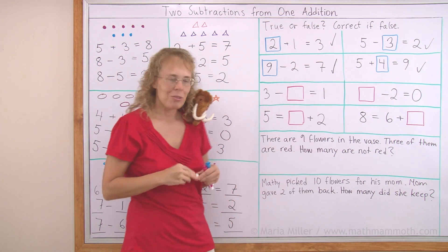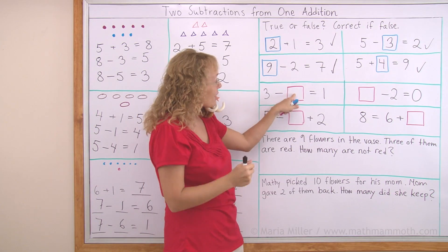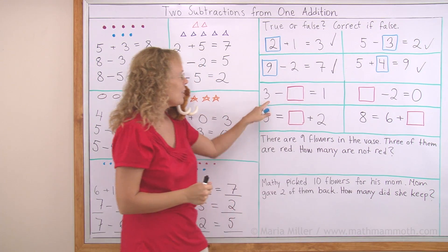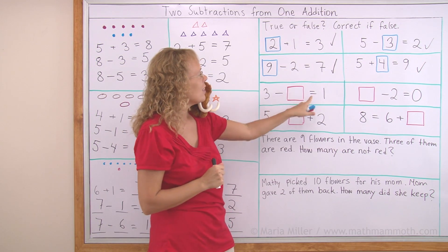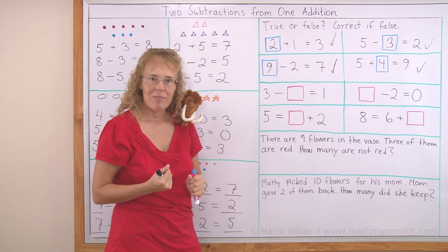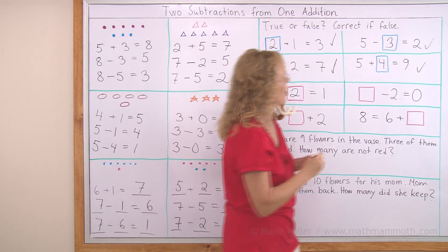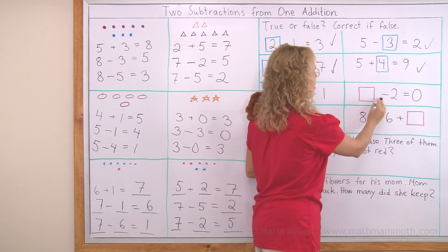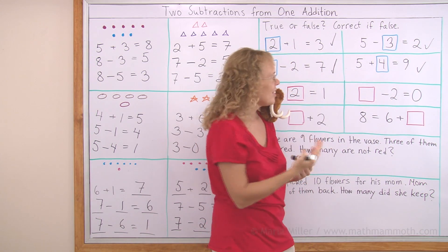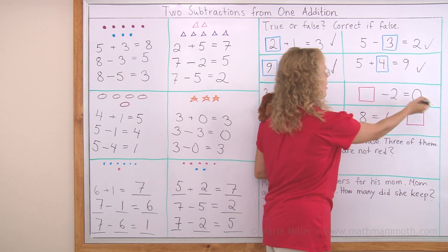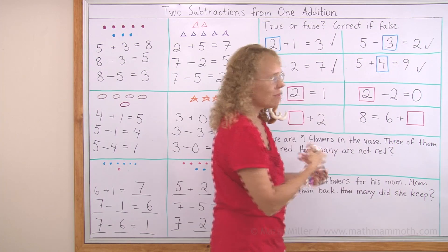And now we get to fill in the numbers into the empty boxes. Three minus what number equals one? If you have three marbles in the beginning, you take away some, and then you have one marble left. How many did you take away? Two goes here. And then you have so many, you take away two, you're left with none. None is left. You have so many, you take away two, you have none left. The answer is you have two in the beginning, and then you take the two away.